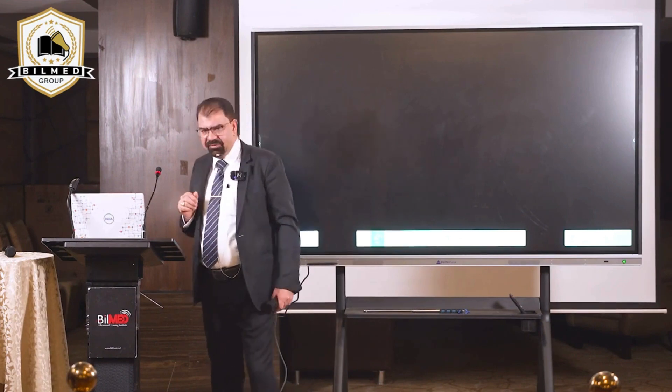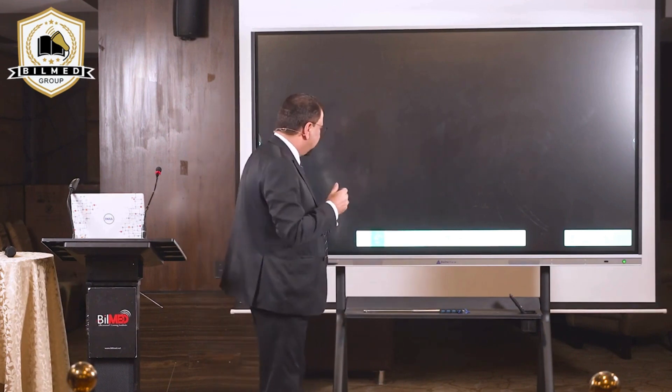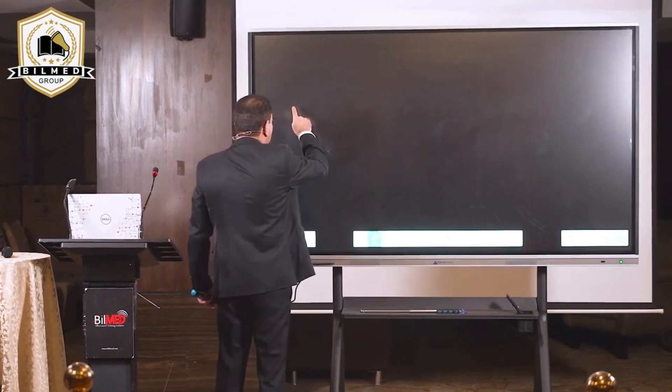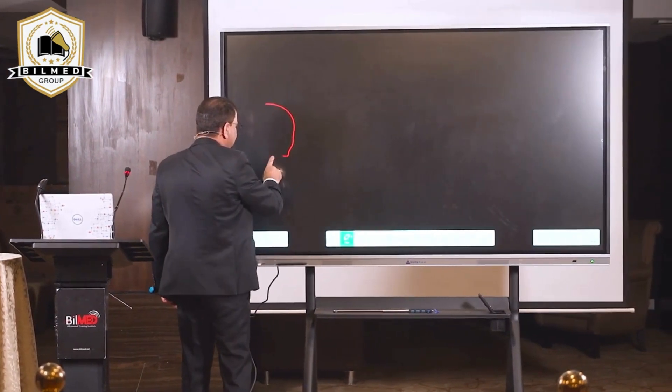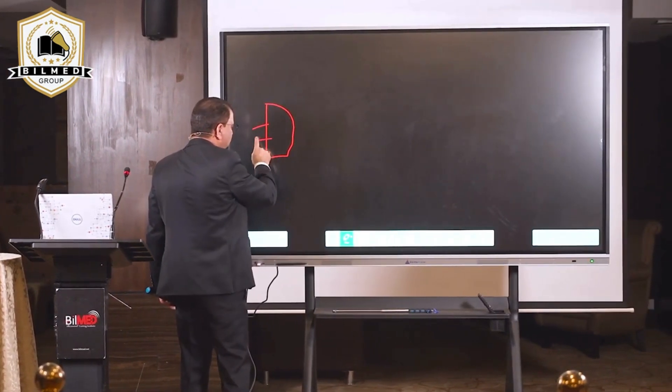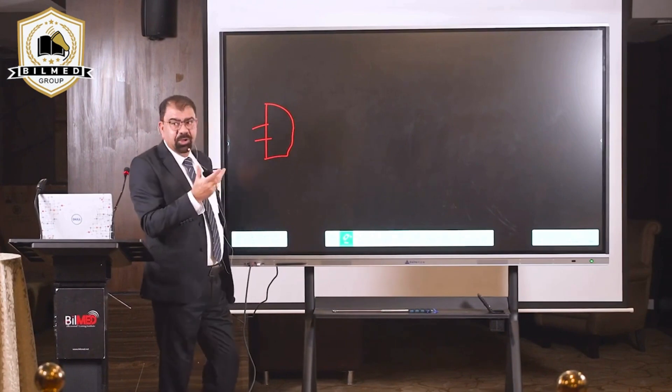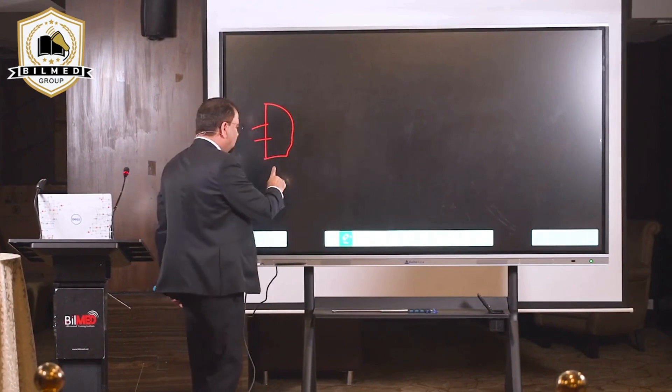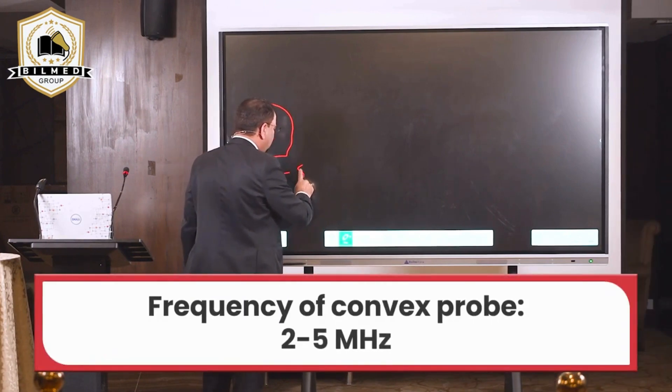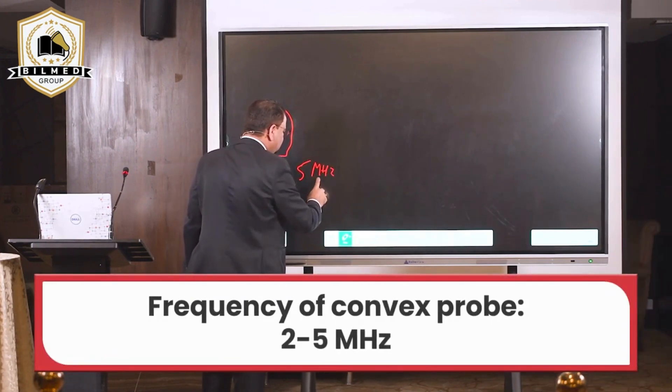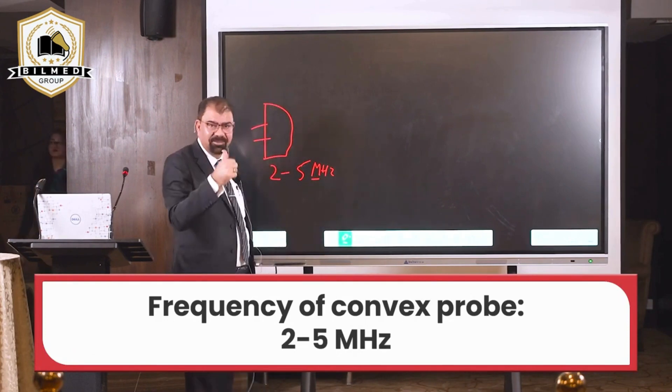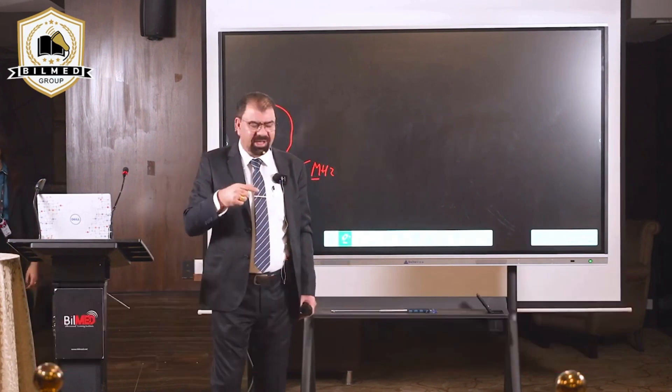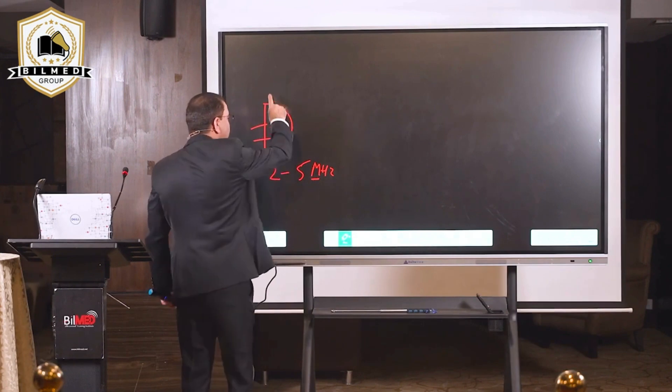When we talk of a convex probe, what is the frequency? It's roughly between 2 and 5 megahertz. Mega means million, so there are millions of Hertz in this convex probe. This is an abdominal probe.